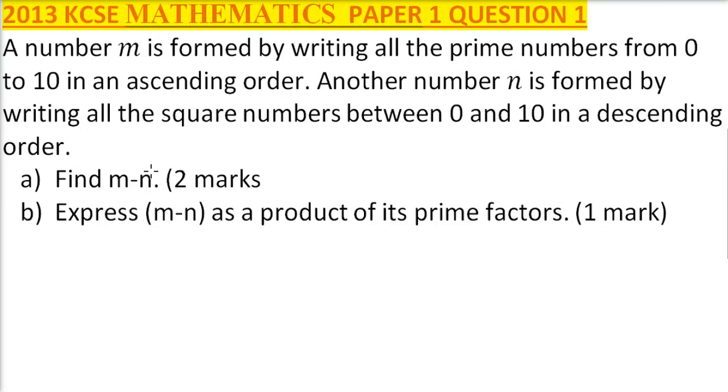2013, paper 1, question 1. We are told a number m is formed by writing all the prime numbers from 0 to 10 in ascending order. Another number n is formed by writing all the square numbers between 0 and 10 in descending order. Find m minus n.